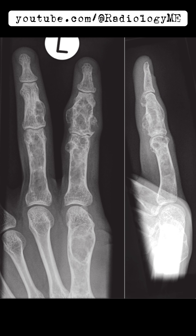These lesions do raise a concern for possible malignant transformation, especially in long bones. Ollier's disease carries a risk of malignant degeneration into chondrosarcoma. In this case, we're looking at the phalanges, so the risk is lower compared to the long bones, but it's something we'd still keep in mind for any follow-up.